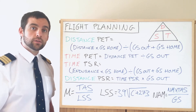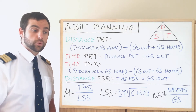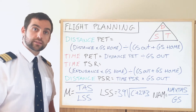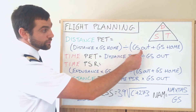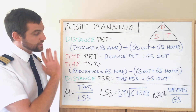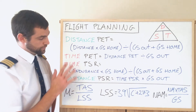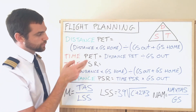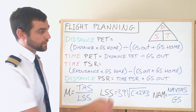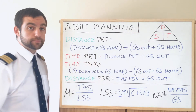Do a few exercises on them — you'll find it's very straightforward. First, when you see one of these questions, calculate the headwind and tailwind components, get your ground speed out and ground speed home, then it's just plugging the figures into the formulas. If you're ever struggling to remember whether to divide or multiply, remember your triangle.